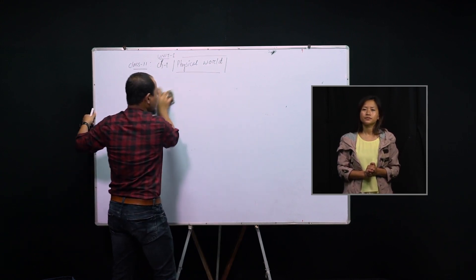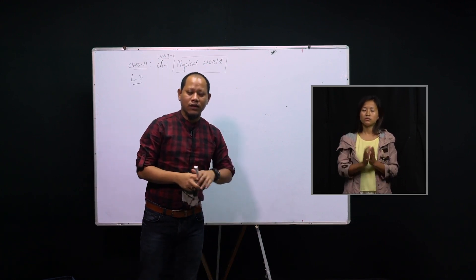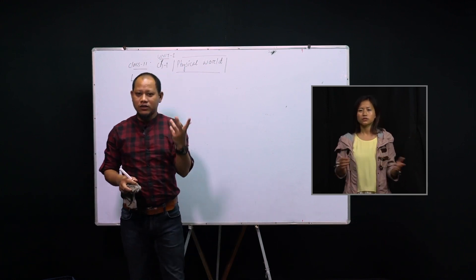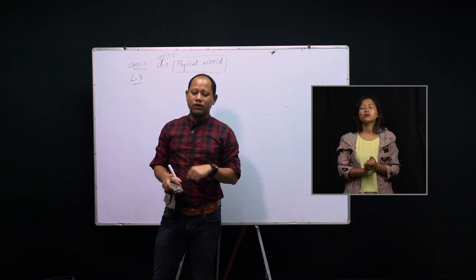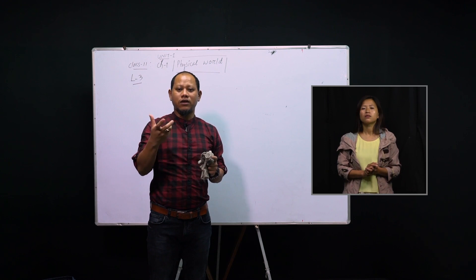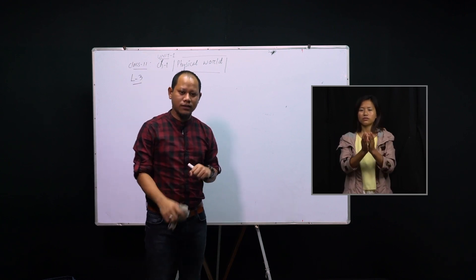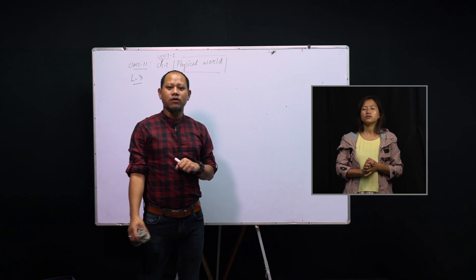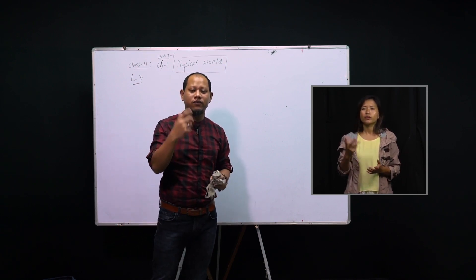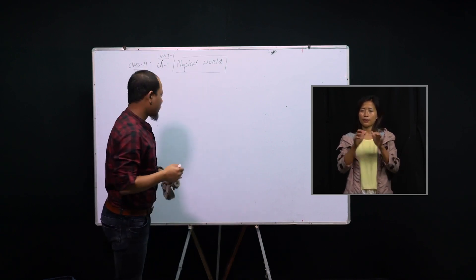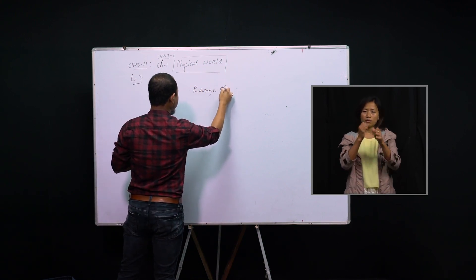So now we have learned a lot about physics — the scope of physics, the relation of physics with technology, the contribution of physics in society and in other disciplines of science. Now I will tell you about the range of physics — what is the ability of physics.